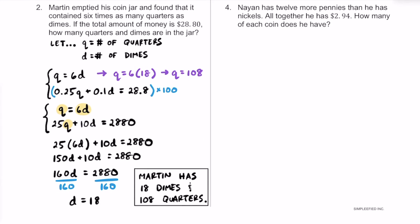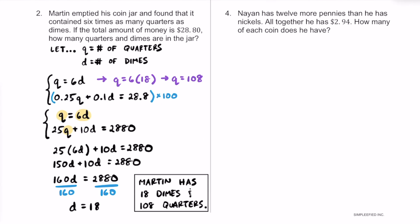Here's one more example. In this problem, 9 has 12 more pennies than he has nickels. Altogether, he has $2.94. How many of each coin does he have? Let's define P for the number of pennies and N for the number of nickels.